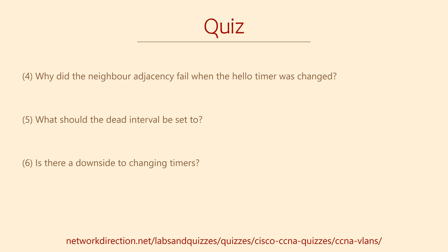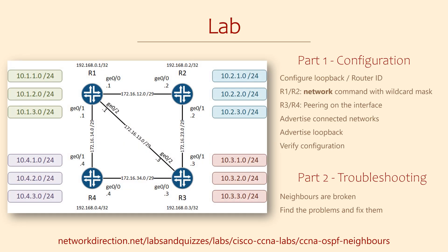And that's one way of improving OSPF's performance. You can use this principle with other routing protocols too. There are often pros and cons when we tune our network, so it's good to find the right balance. And finally, we have the lab. Part one is configuring the topology as shown. This includes configuring a loopback which provides the router ID, configuring peering between all routers, advertising the three connected networks and the loopback IP, and verifying that it's all working.